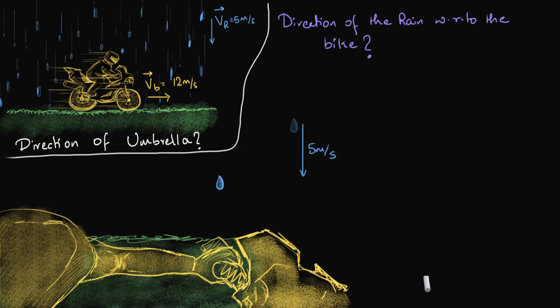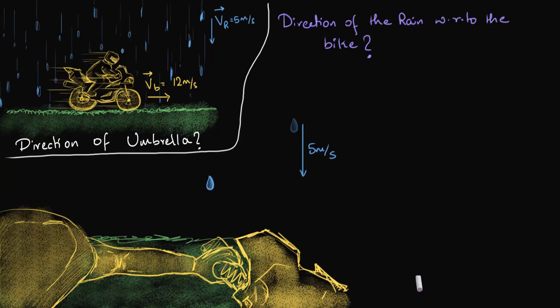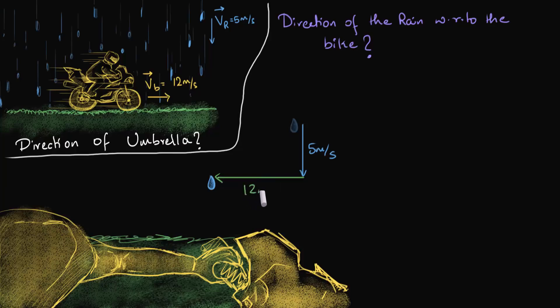So the whole thing goes back 12 meters. So let's put that as well. So the whole thing would go 12 meters back in one second. And so now you can see that one second ago, the drop was here. Now it's over here. So as seen from the bike, the raindrop doesn't fall straight down, but instead, it goes this way.